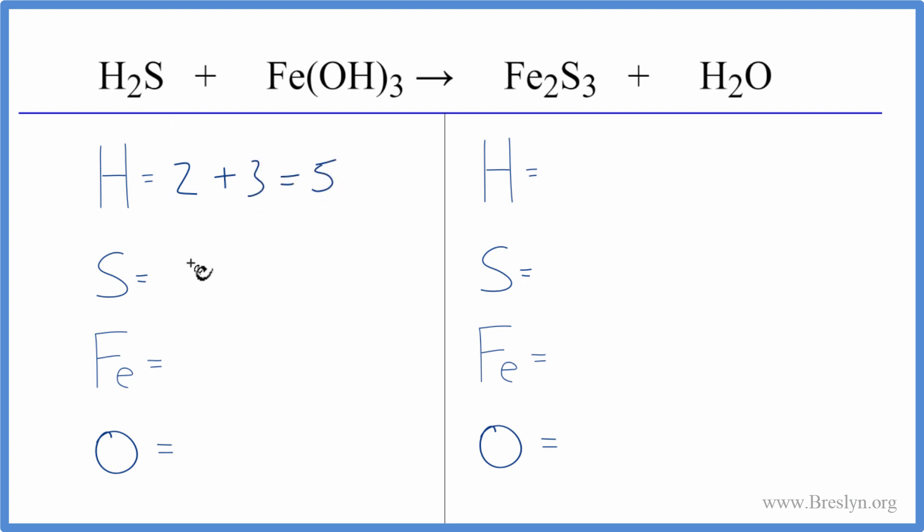We have one sulfur, one iron, and this three applies to everything in the parentheses. So we have three times one, three oxygen atoms. On the product side, we have two hydrogens, three sulfurs, two irons, and then one oxygen.